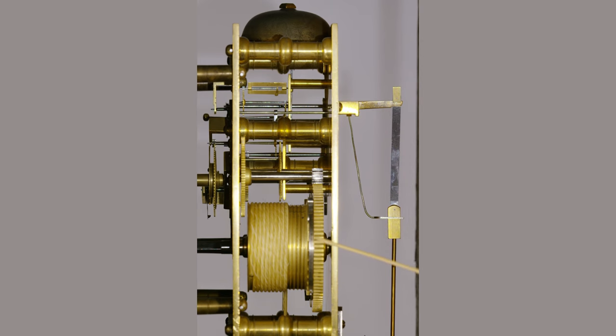So you can see the great wheel, the second wheel, the third wheel, but the other wheels are hidden and the escape wheel is hidden by this great big pillar right in the middle.